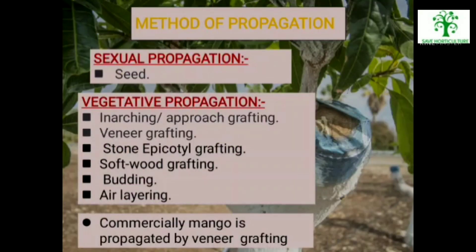Method of Propagation: The two basic propagation options for mangoes are by sexual method by means of seed, and vegetative method by means of inarching or approach grafting, veneer grafting, stone epicotyl grafting, softwood grafting, budding and air layering. The best propagation method will depend on the cultivars required and the growing conditions. For commercial propagation of mango, veneer grafting is preferred.